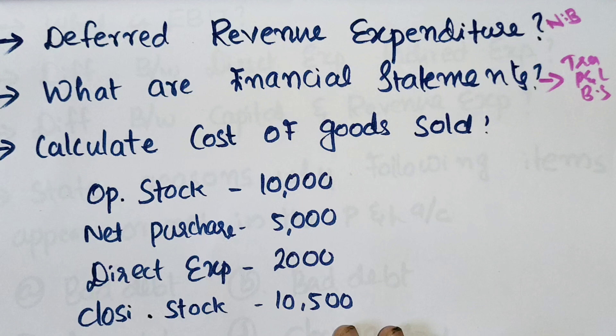What are financial statements? Financial statements include the Trading and P&L account and the Balance Sheet. The Trading account gives us the gross profit, the P&L account gives the net profit, and the Balance Sheet shows the financial position.